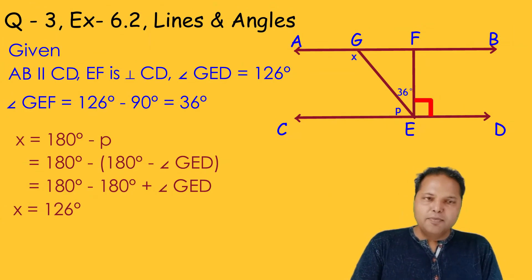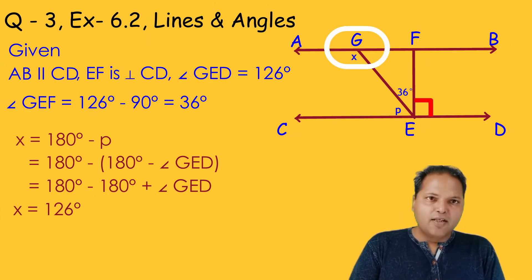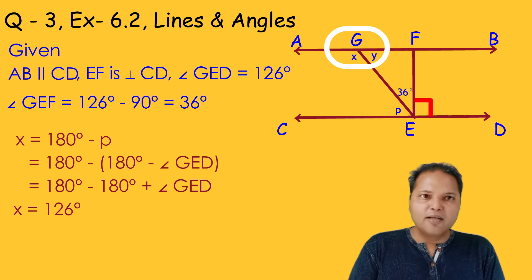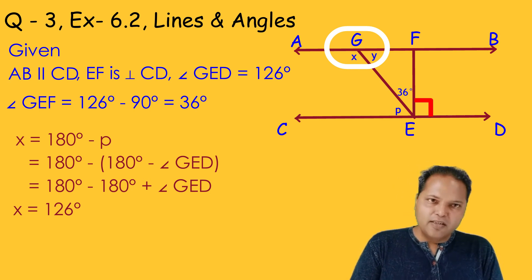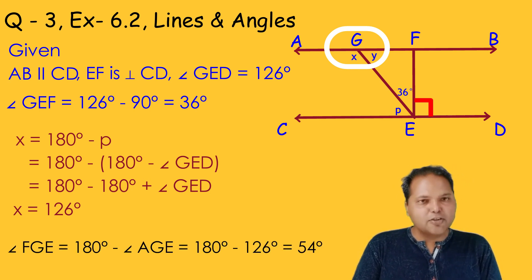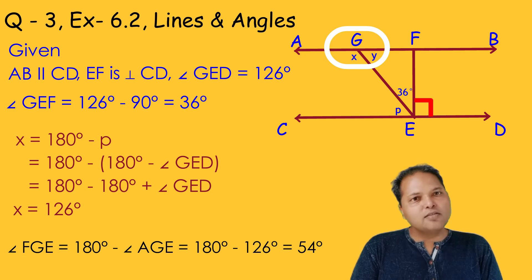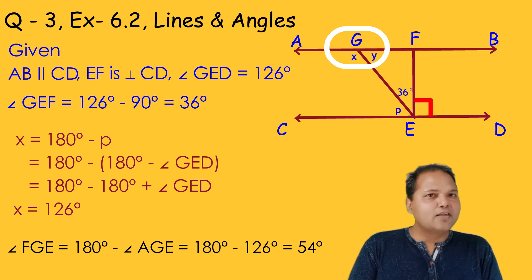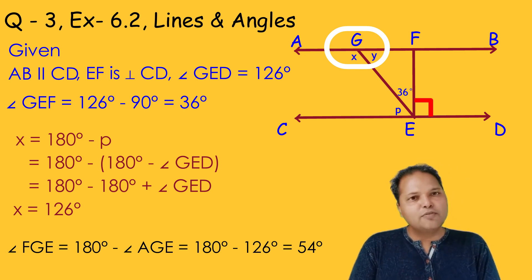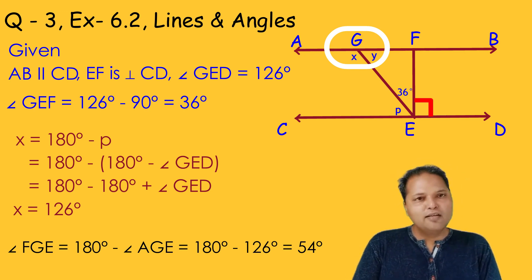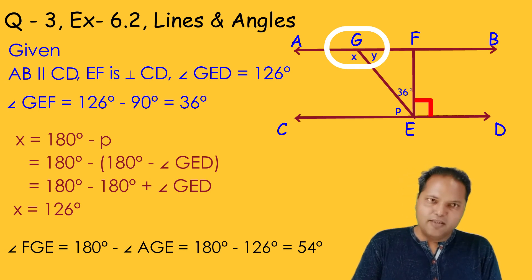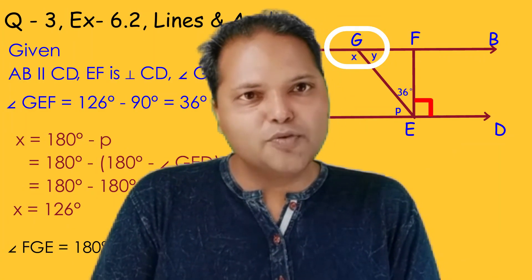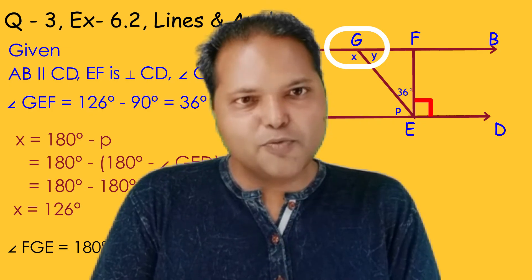Since AB is a straight line, we can say that angle AGE and angle FGE together are equal to 180 degrees. So we can easily find out the value of angle FGB. This is how we have solved this question.